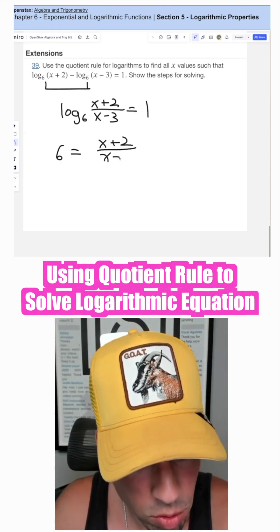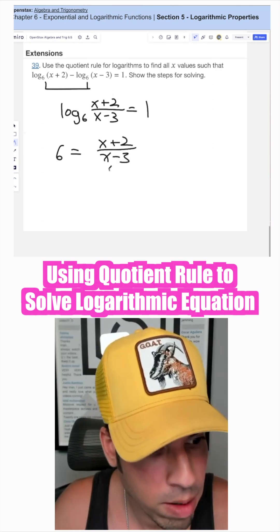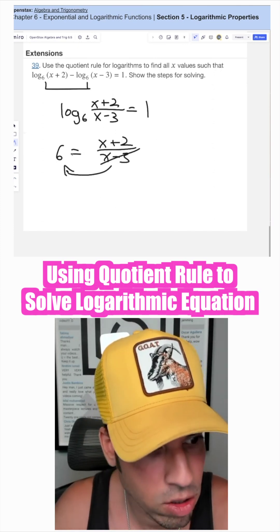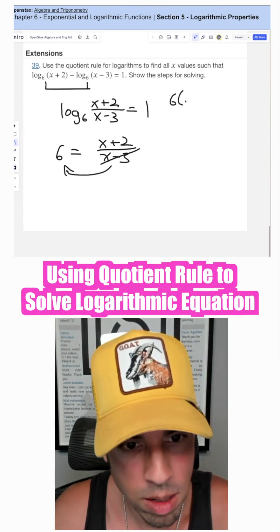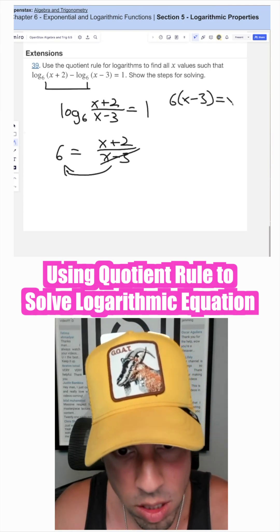Now we're going to solve. I'm going to multiply both sides by x minus three. Obviously it's going to cancel out here. Here it's going to be six times x minus three equals x plus two.